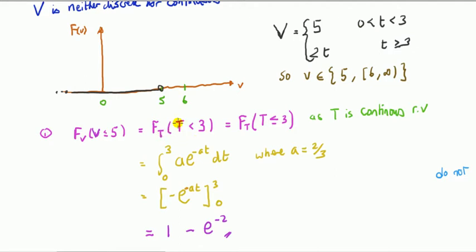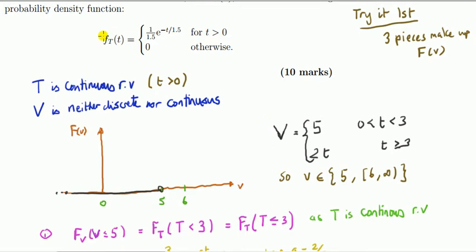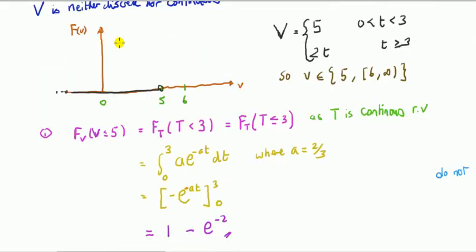It's concerning the random variable T, which is why I put a subscript T — to show we're now talking about a different distribution. Because T being exponential is continuous, T less than 3 is the same as T less than or equal to 3. I write it in that form because the definition of a CDF uses less than or equal to. We compute this by integrating the PDF of T, so we just integrate. It's calculus at that point — integrate and that's the answer for that segment.